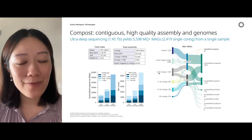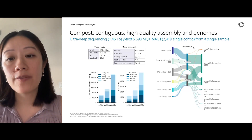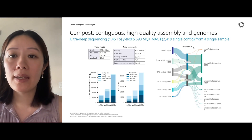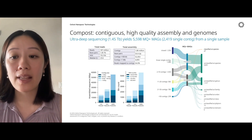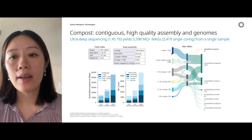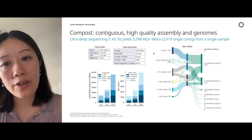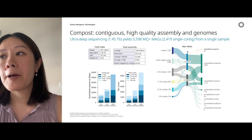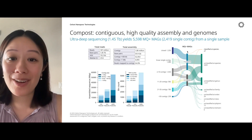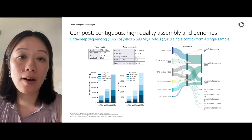Taking the entire 1.45 terabases into account, we ended up binning over 5,500 MAGs of medium or higher quality. In the Sankey diagram, you can see the breakdown of those MAGs by contiguity as well as taxonomic classification by GTDB. Over 2,300 of these MAGs are comprised of a single contig — many of them closed contigs — which is exactly what you want to see: assembling and capturing a genome on a single contig.